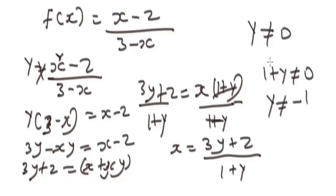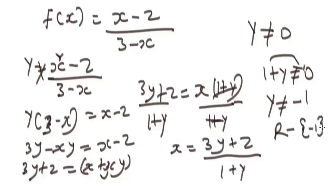Setting 1 + y = 0 gives y = −1, so y cannot equal negative one. That means the range of this function is all real numbers from negative infinity to infinity, but not including negative one. In interval notation, you write it as negative infinity to negative one, union negative one to positive infinity, not including negative one.